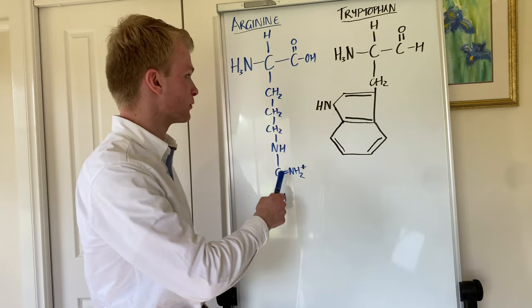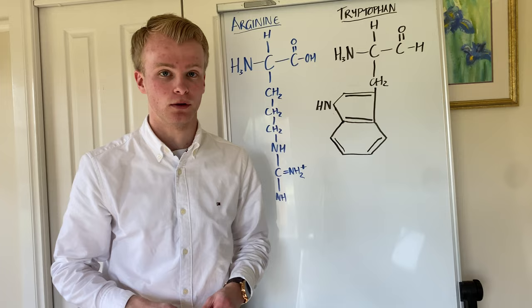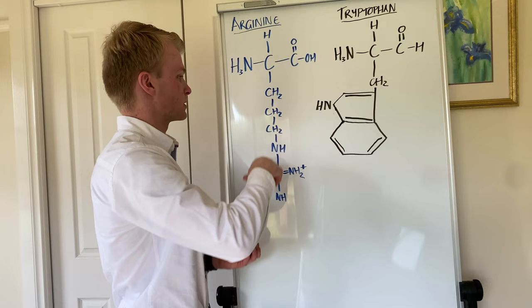We have arginine here on the left in blue, and then tryptophan in black on the right. Straight away you'll realize that they are quite different in their side chains — the side chains are these sections here, below there and below there.